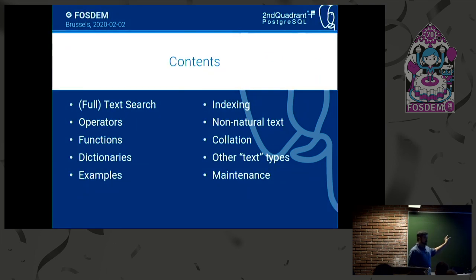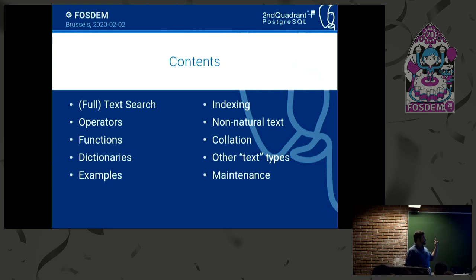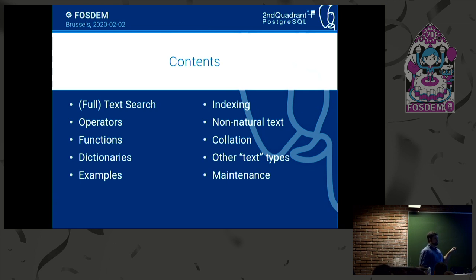We're going to look at what full text search means. We're going to look at operators and functions, what dictionaries are in Postgres, a few examples, how to index text in Postgres, how to deal with text that isn't human language or natural text, what collations are, what other things you can search for that are not strictly text, and how to keep this whole thing running.